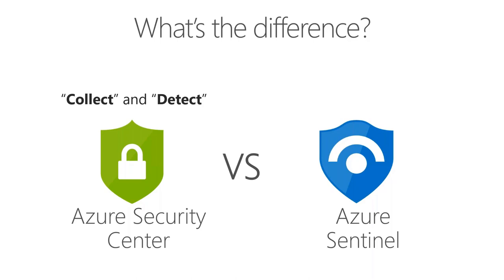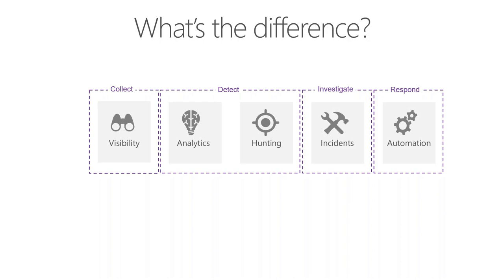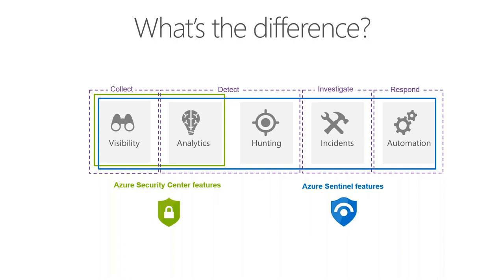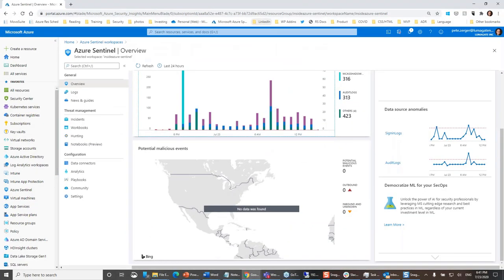Azure Sentinel is a SIEM and SOAR solution. The SIEM part — Security Information and Event Management — is what you'll hear most. Sentinel has more than 50 connectors that bring data in from all manner of sources, including Azure Security Center. I can take the alerts that happened in Security Center, send those to Sentinel, and say I want you to turn that into an incident that somebody needs to investigate. Sentinel is where I can investigate and respond to incidents in my environment.